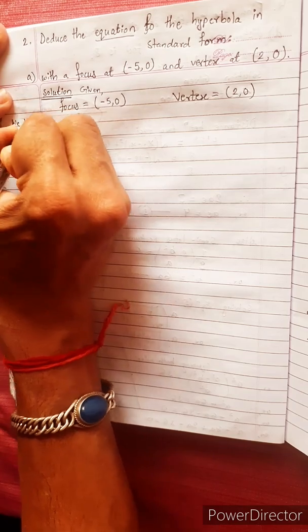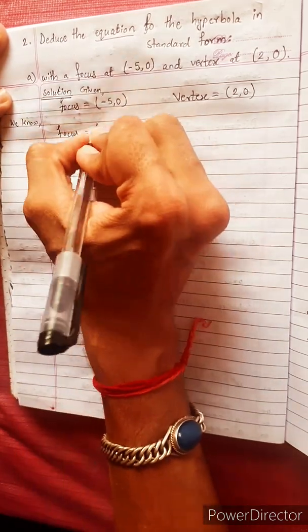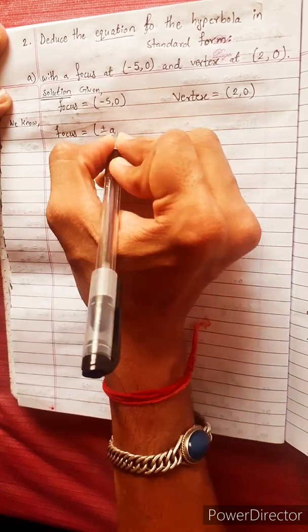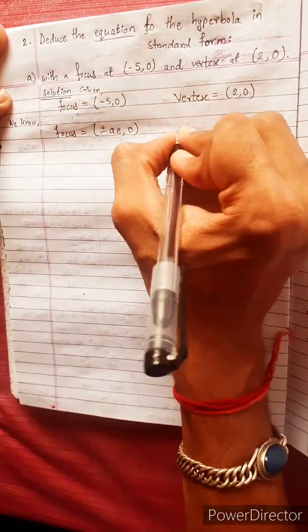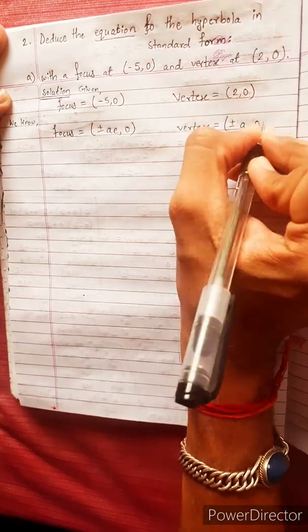What we know is the formula of focus. In hyperbola, formula of focus is plus minus ae, 0. Similarly, vertex is equals to plus minus a, 0.